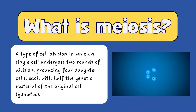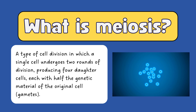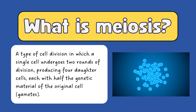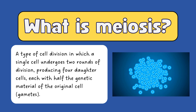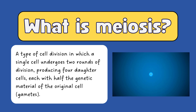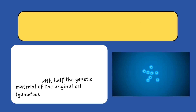Meiosis is a specialized type of cell division that involves a single cell undergoing two rounds of division. This process produces four daughter cells, each containing half the genetic material of the original cell. These daughter cells are known as gametes, which include sperm and egg cells.